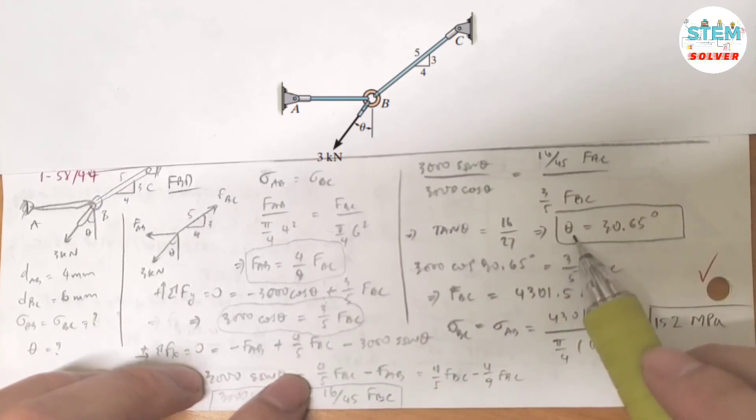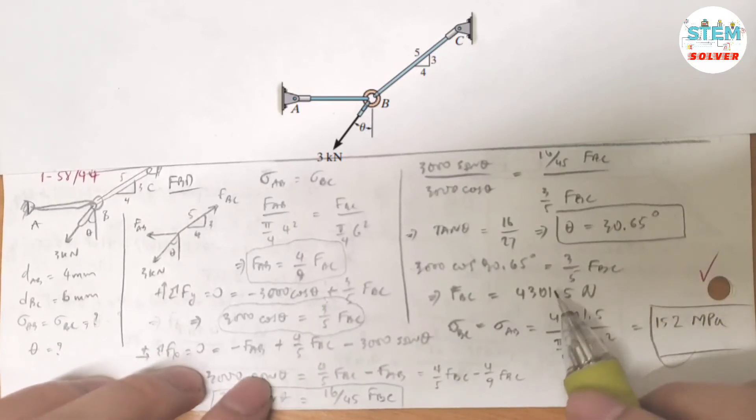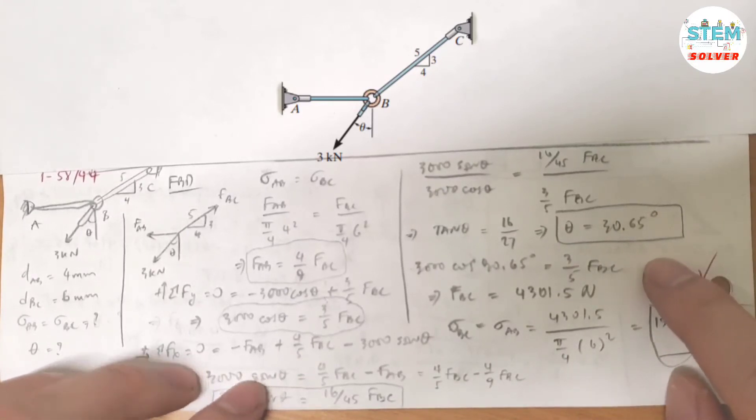Then I found the angle of 30.65 degrees. So we're done finding the angle theta.